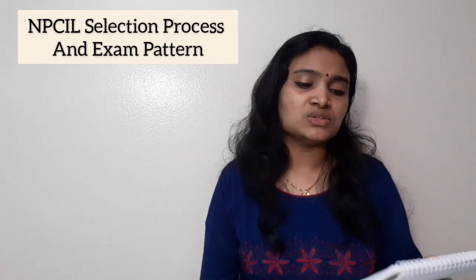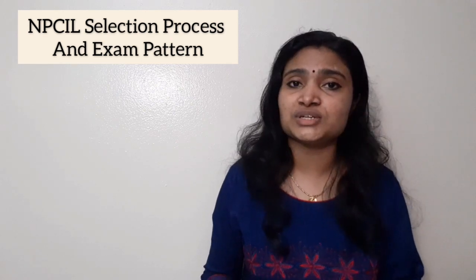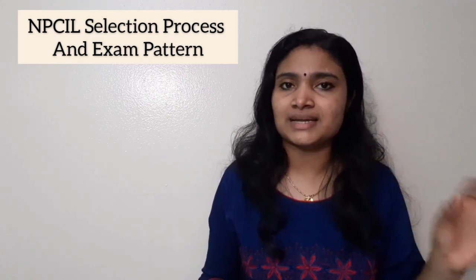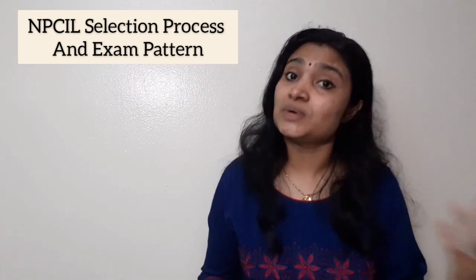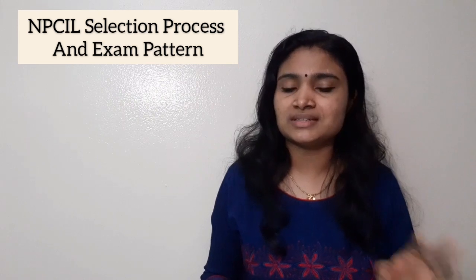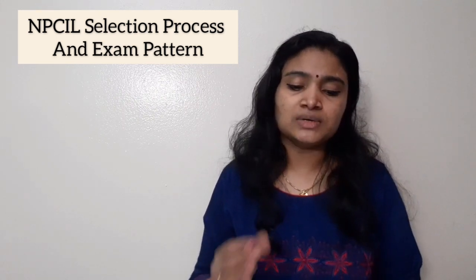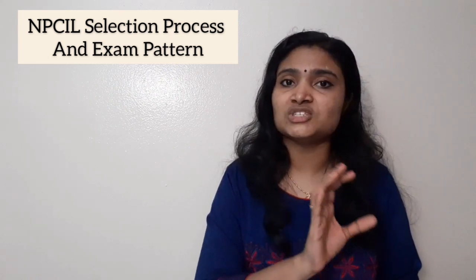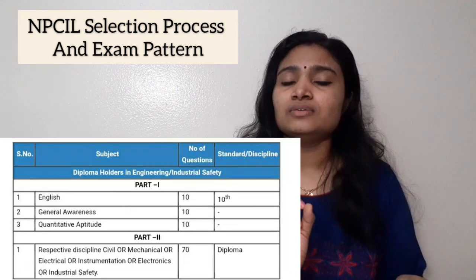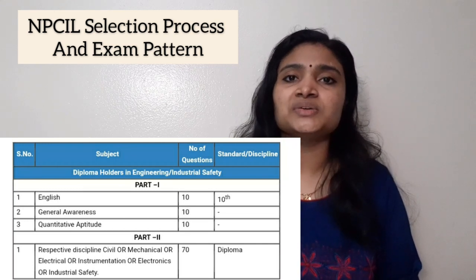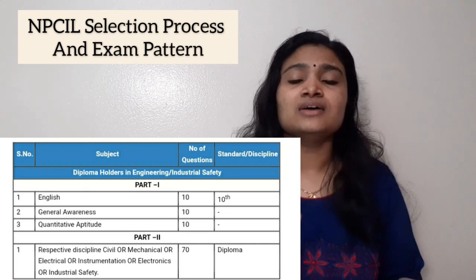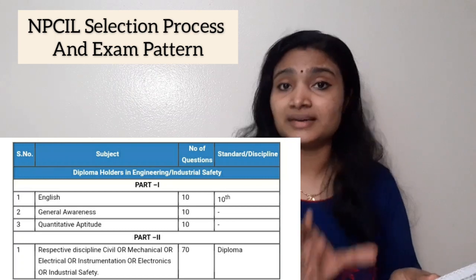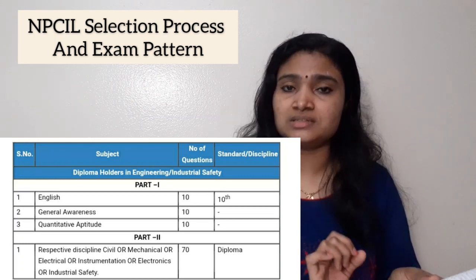First let us see the written exam pattern for stipendiary trainee diploma. The written examination consists of 100 questions and the time duration is two hours. There will be an additional 20 minutes given to disabled people, so for that category the time duration will be two hours plus 20 minutes. For all other categories the time duration is two hours. The questions are divided into two parts: Part 1 consists of general sessions and Part 2 has questions from your trade.